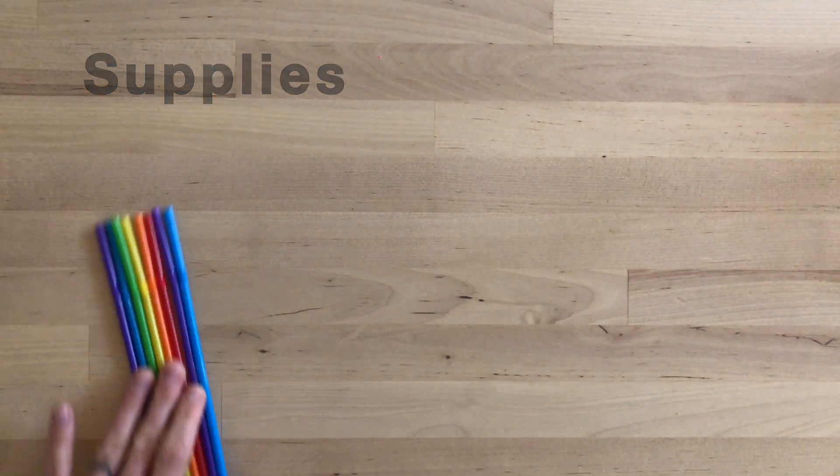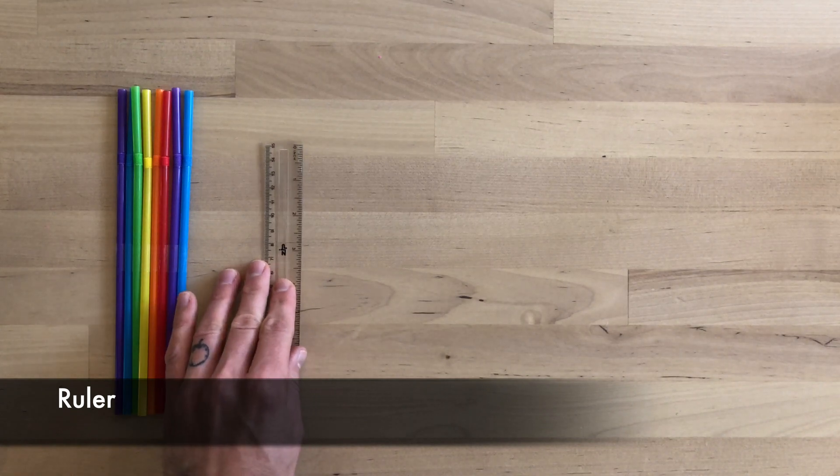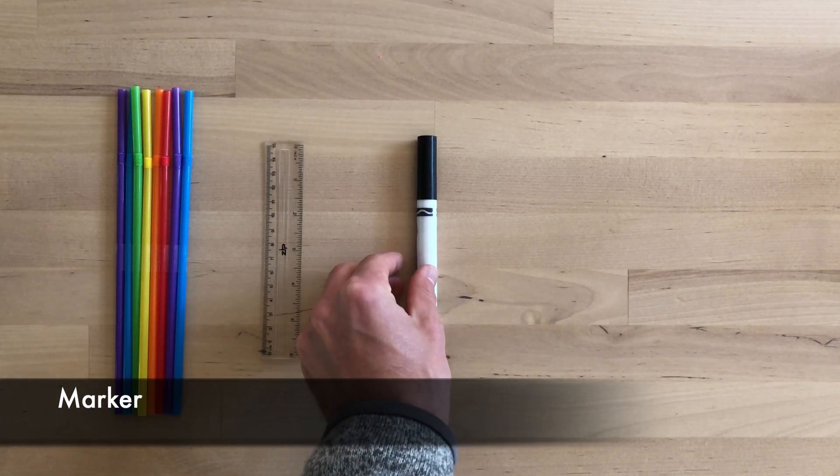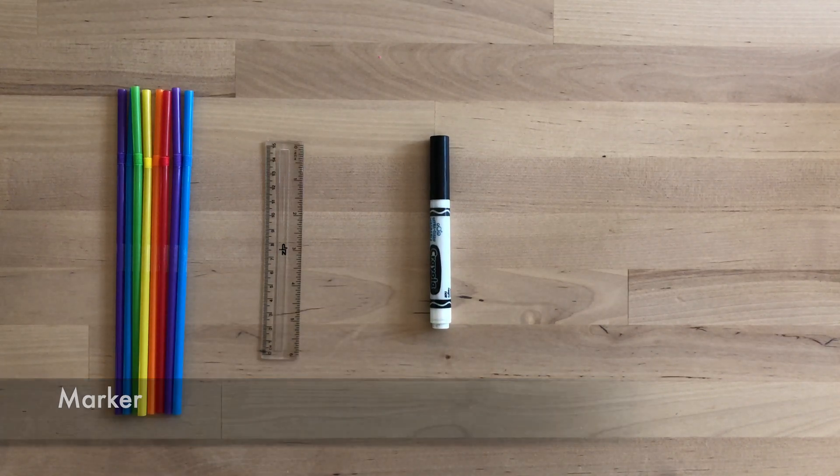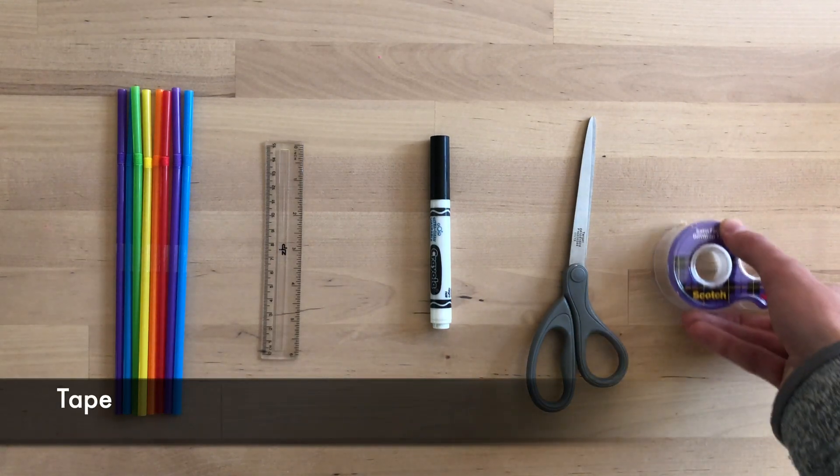Supplies. First, you're going to need eight plastic straws, a ruler, a marker, a pair of scissors, and some kind of tape.